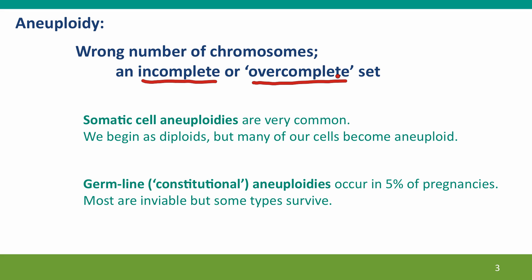Both somatic and germline aneuploidies are very important. Many, many of our cells are aneuploid. Although we start out diploid — egg and sperm, the zygote is diploid — but during development, many tissue types are quite tolerant of chromosome loss and gain, and so aneuploid cells accumulate. In the germline, most aneuploidies are inviable, but sometimes survive, and aneuploidies are very common.